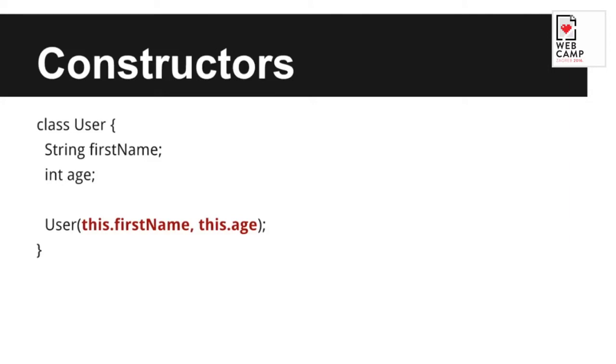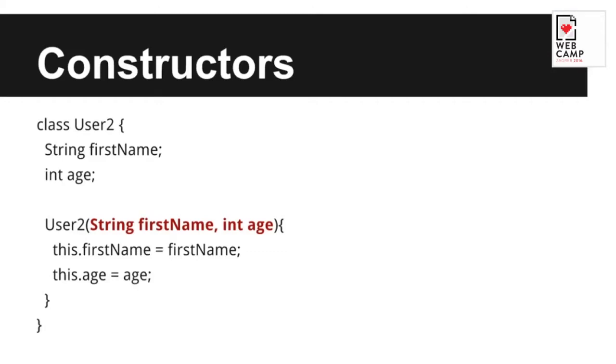With constructors, Dart does something neat. Instead of writing this.firstName = firstName and this.age = age to assign passed-in values to properties, you can shortcut it with this.firstName and it automatically gets assigned. You can also add a body with curly braces to do additional work like calling methods, but you don't need it. This is a really nice shorthand, especially for models where you typically just want to assign incoming properties.